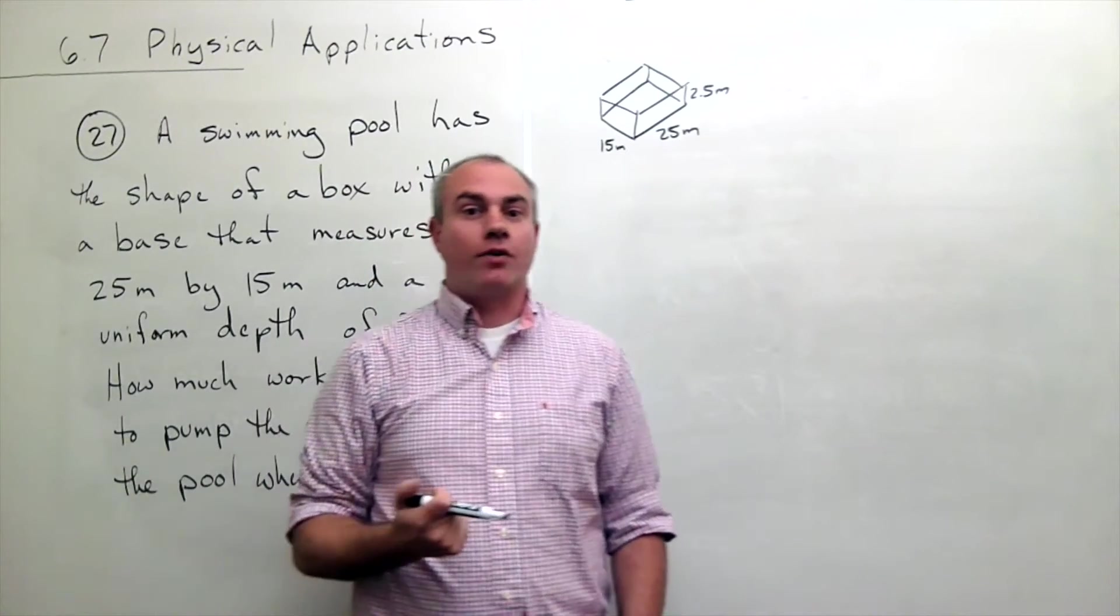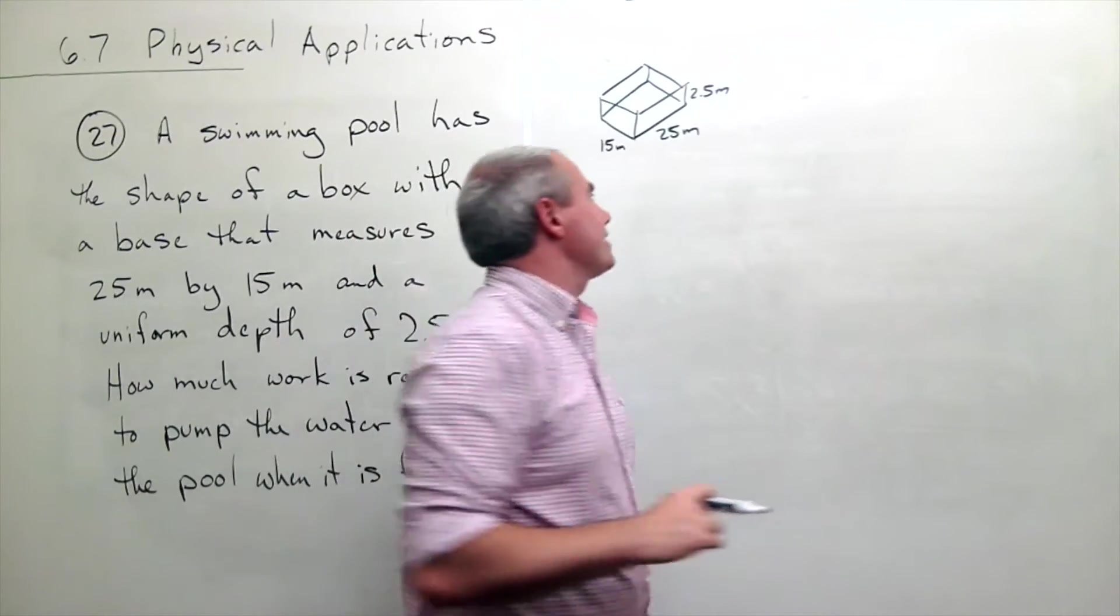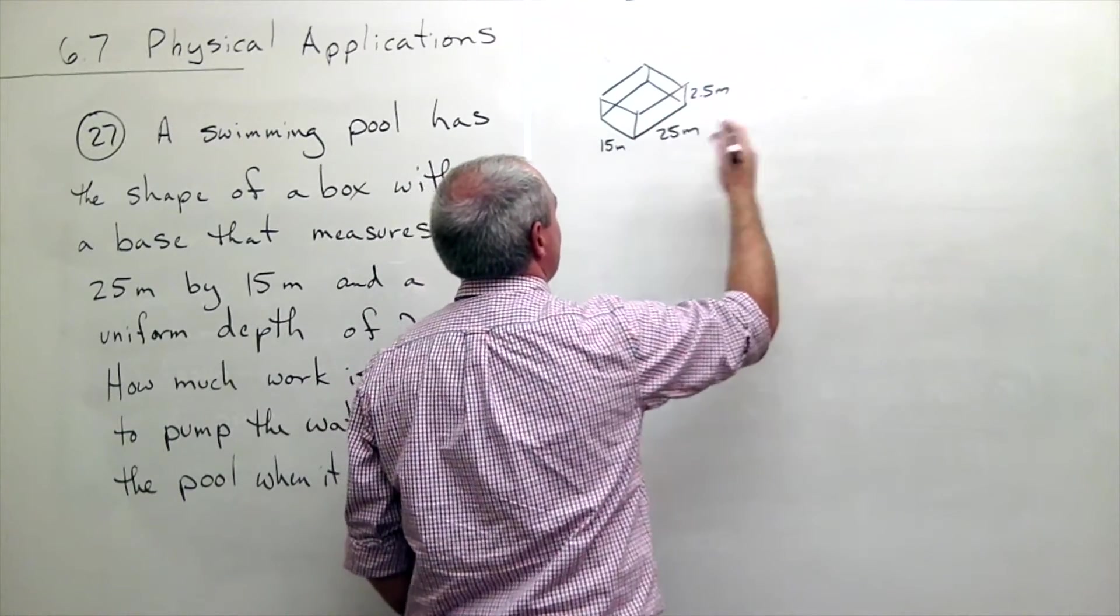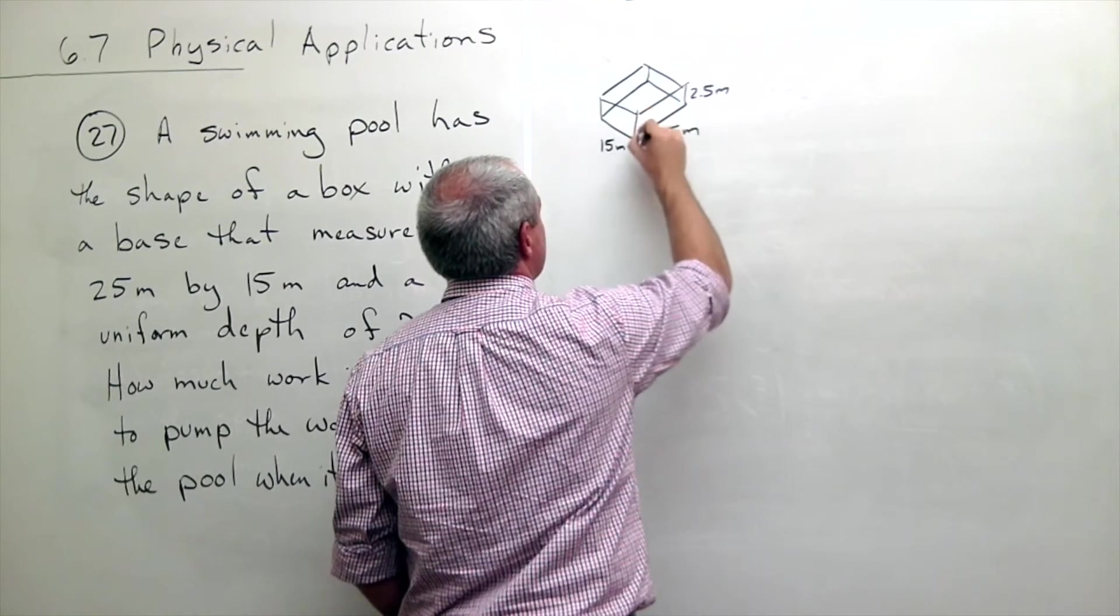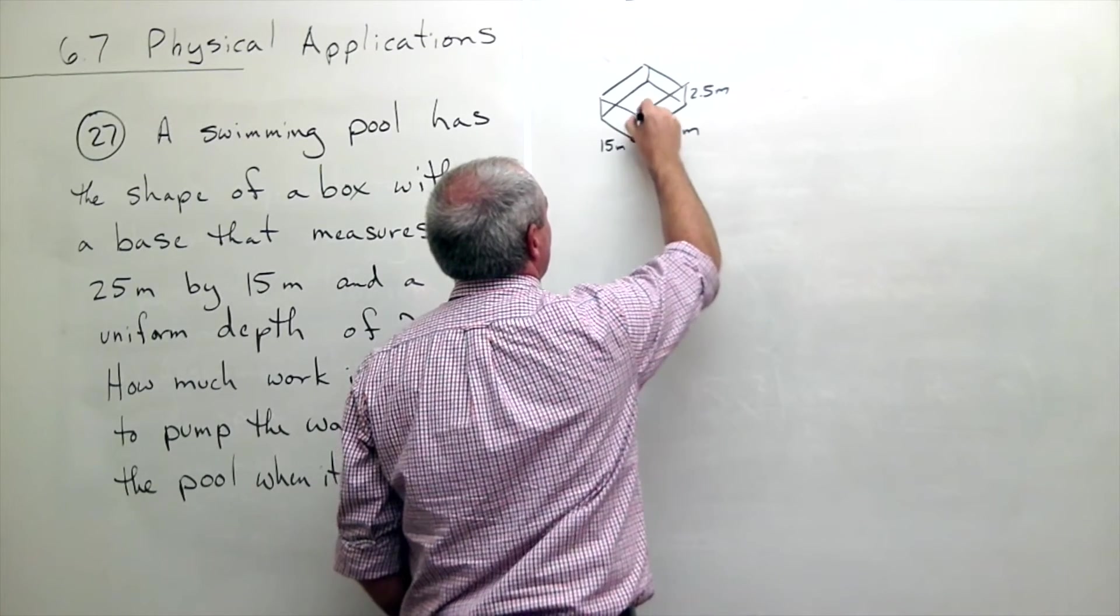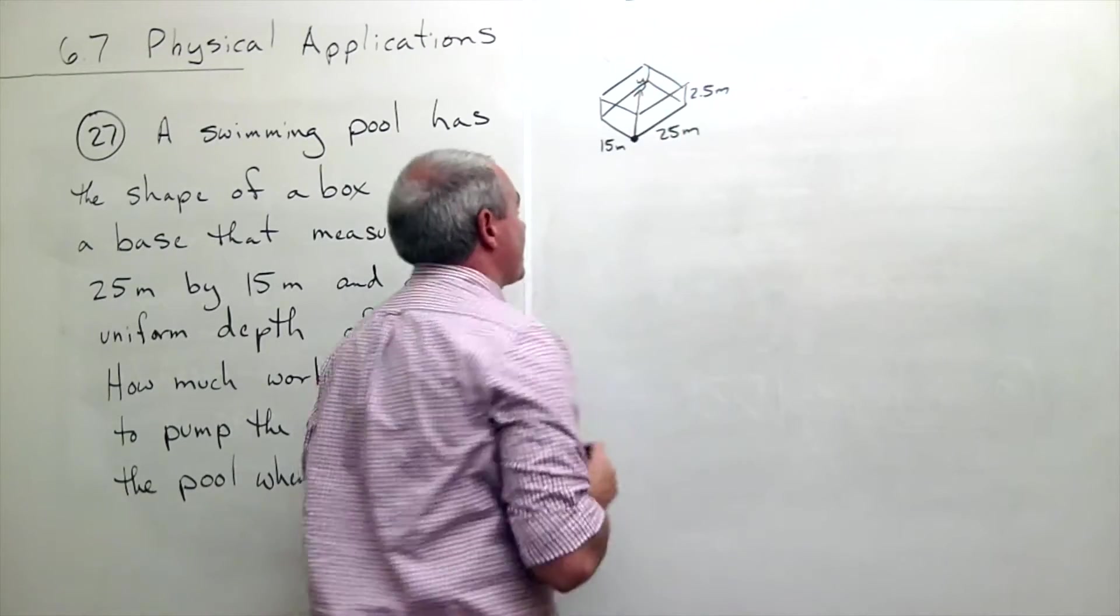The way that I'm going to figure out work done when I'm pumping out this pool is I need to look at some depth. So I'm going to set up some sort of an axis here. And so I'm going to set up my axis this way. I'm just going to go ahead and say that this is the origin and this is the positive y-axis.